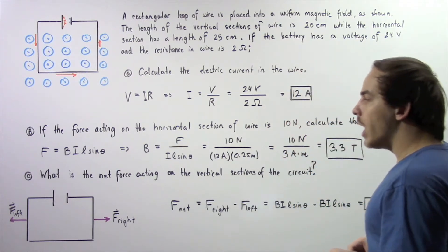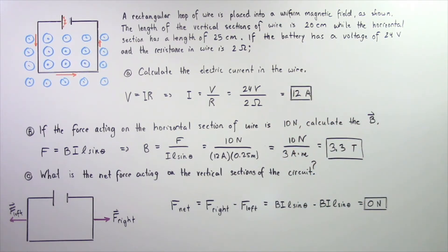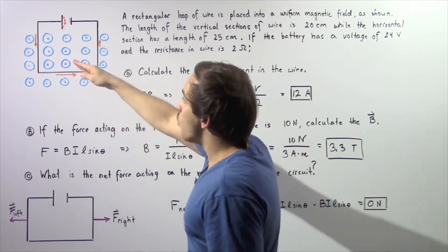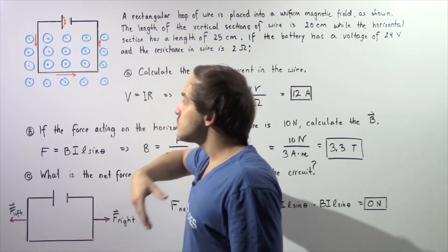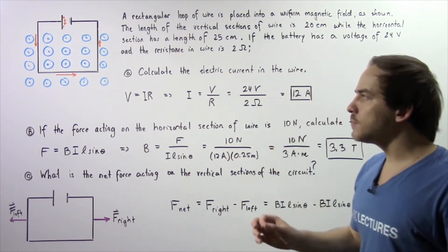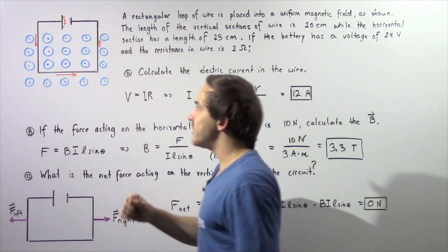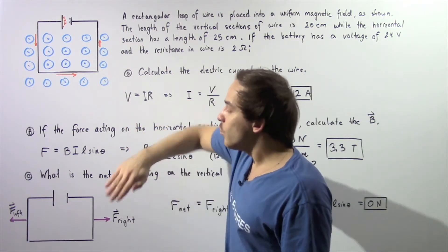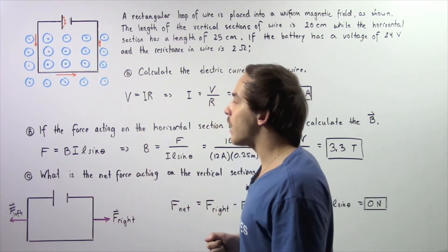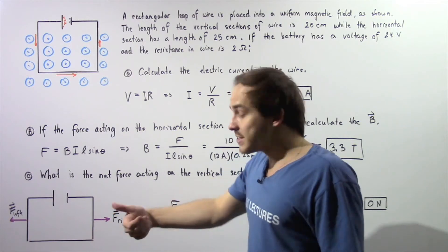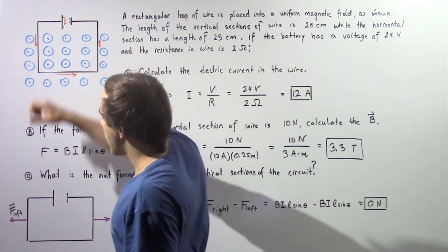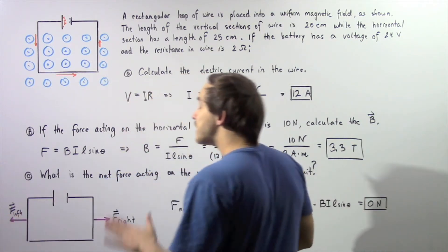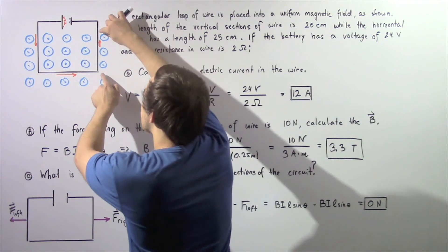For part C, we examine the net force on the two vertical sections of our circuit. In the left section, the electric current points downward. Applying the right-hand rule, we point our right hand in the direction of the current — downward — then curl the fingers in the direction of the magnetic field and extend the thumb. The force on this section points to the left along the x-axis. We'll call that force F-left.